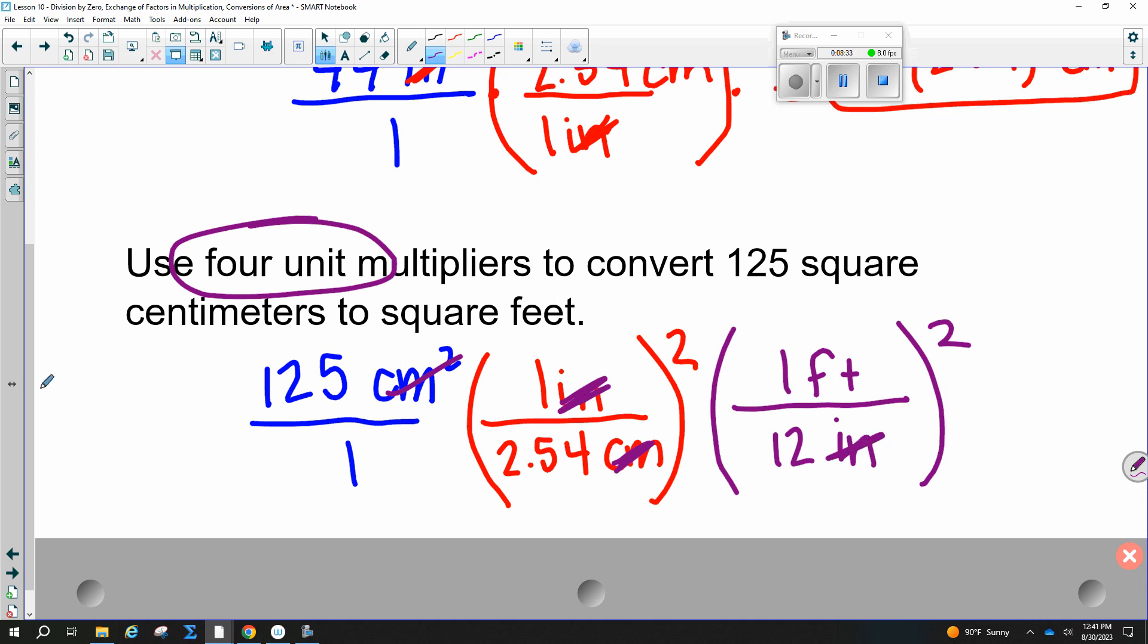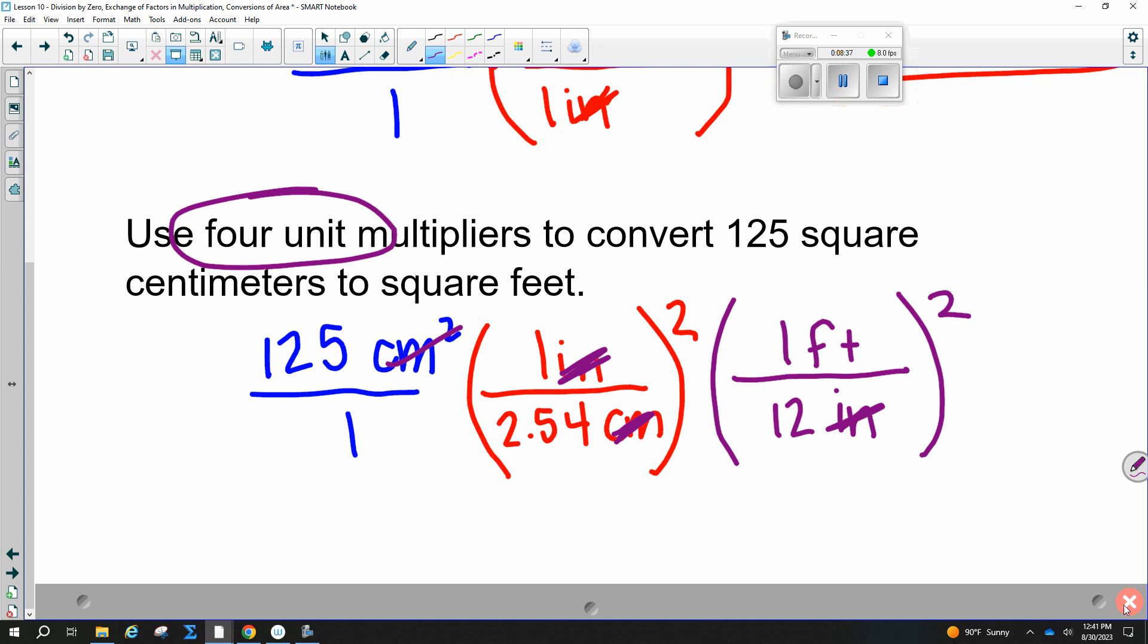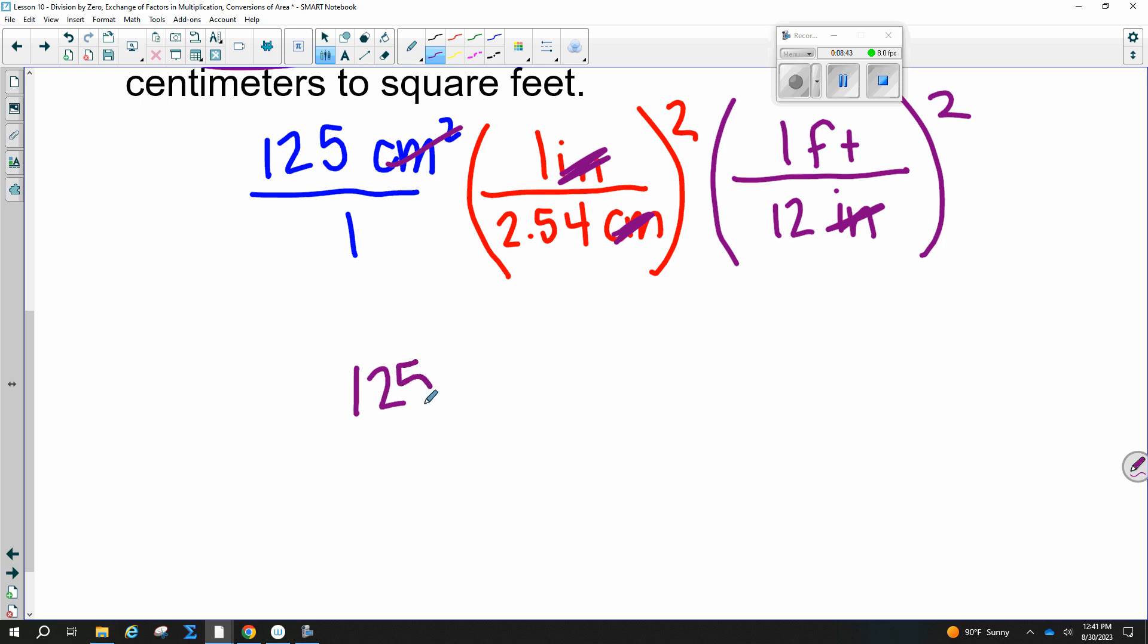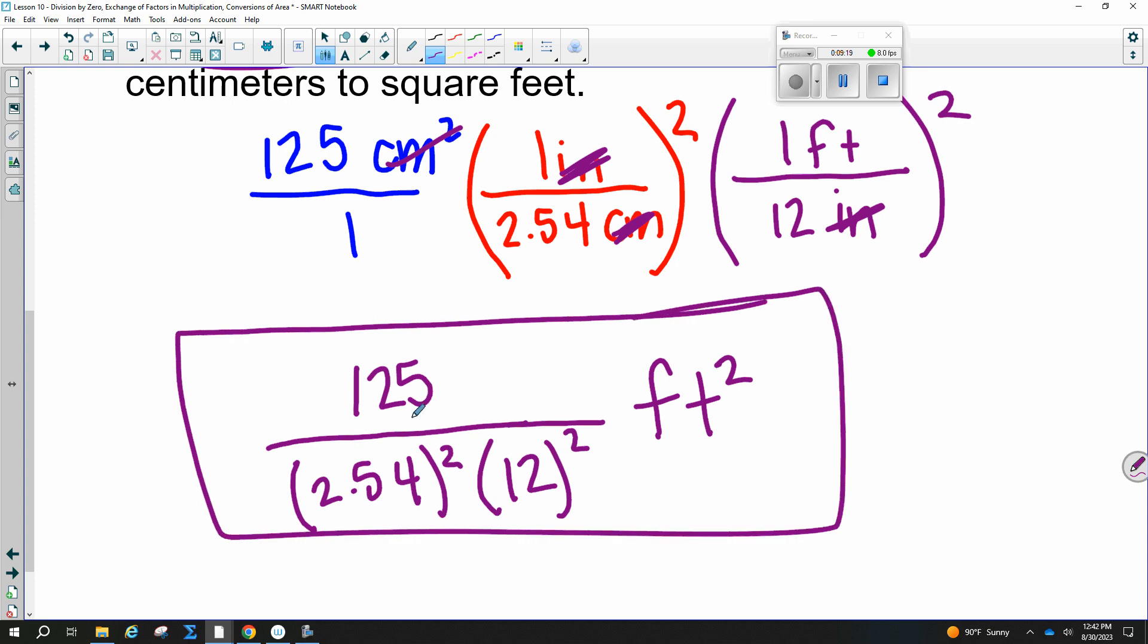And do not get confused on this last step. This is where people, like, make mistakes, even in Algebra 2. So the 125 is on the top. Is it squared? No. The first number is never squared. Now this 2.54, is it in the top or the bottom? Bottom. And is it squared? Yes. It is squared. This 2 is squaring everything. But 1 squared is still 1. And is the 12 in the top or the bottom? It is in the bottom. And is it squared or no? Yes. And then I still need my units. Don't put it in the denominator. Some of you guys are doing that. I would just put it off to the side. My answer is that whole thing in feet squared. And eventually we'll plug these into our calculator and get something that makes sense.